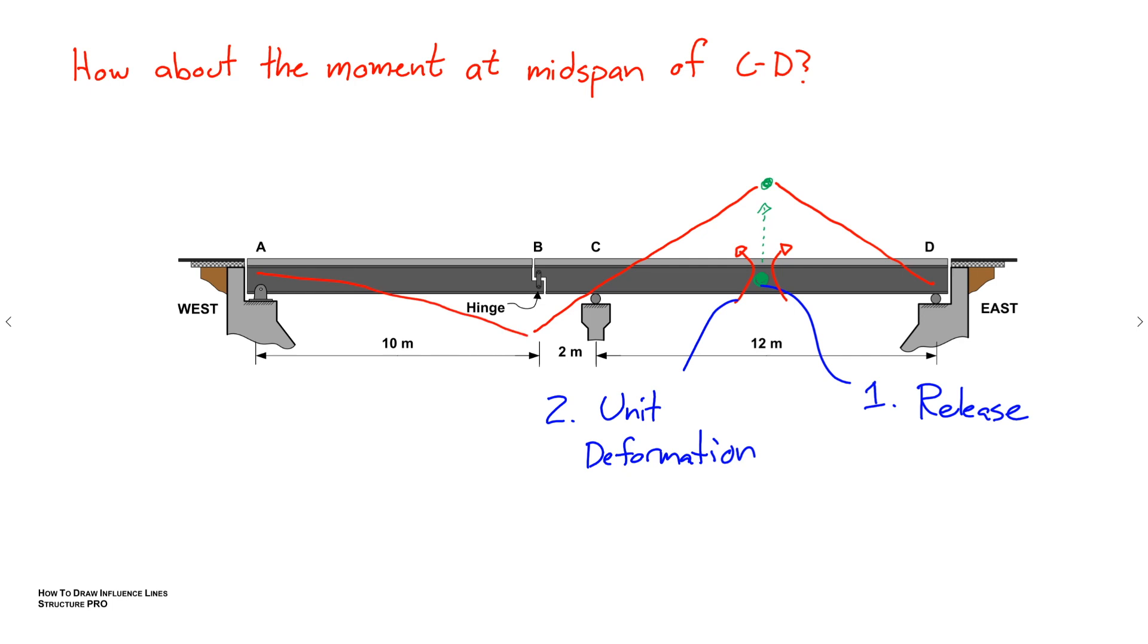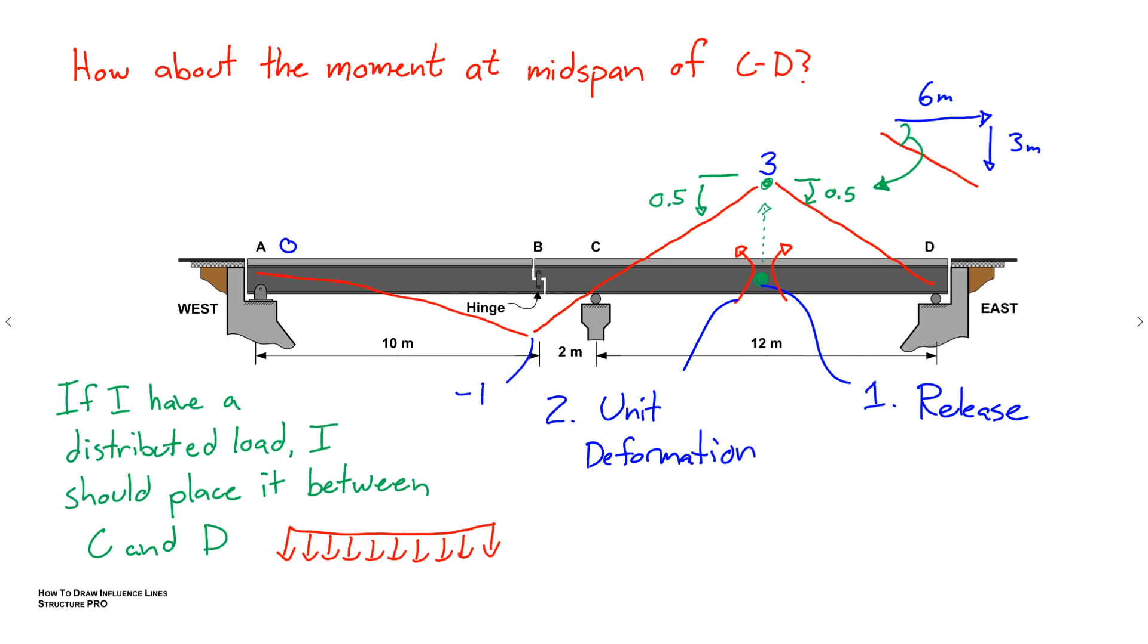Okay, so introducing that compression at the top of the bridge made us have to lift up that hinge. And then we can actually solve for these values just using trigonometry. So if we have a distributed load, we want to make sure we would place it between C and D in this case for the worst effect, and not between A and C. That's what the influence line is telling us.